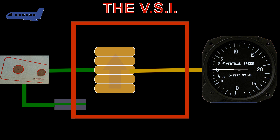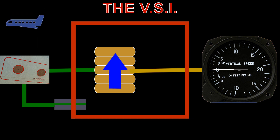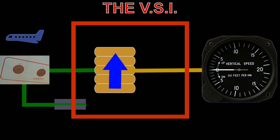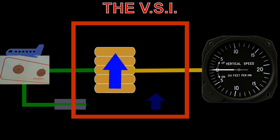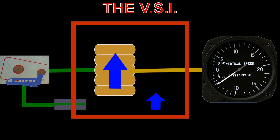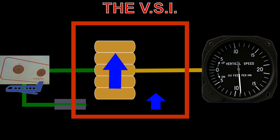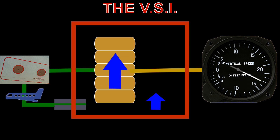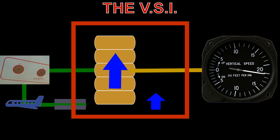Conversely, if the aircraft descends, the pressure within the capsule will increase, while the pressure within the case will increase at a lower rate. This will make the capsule expand, and cause the needle to show a descent.